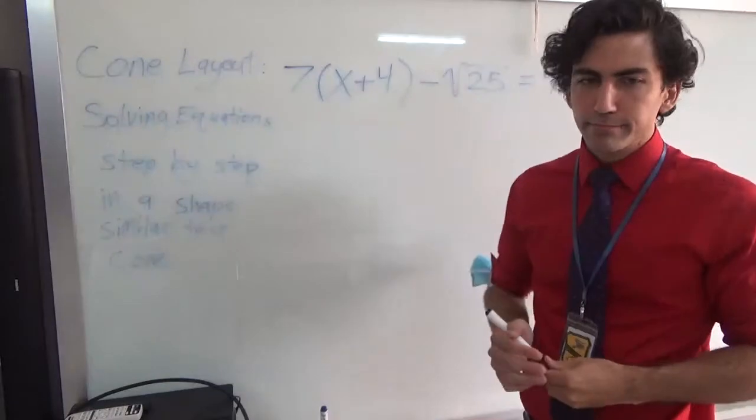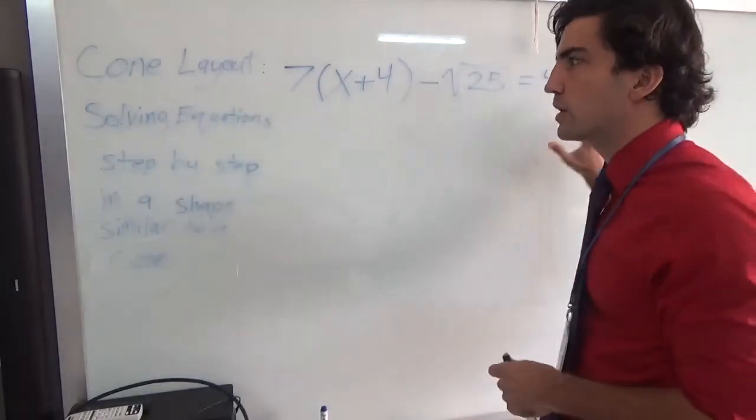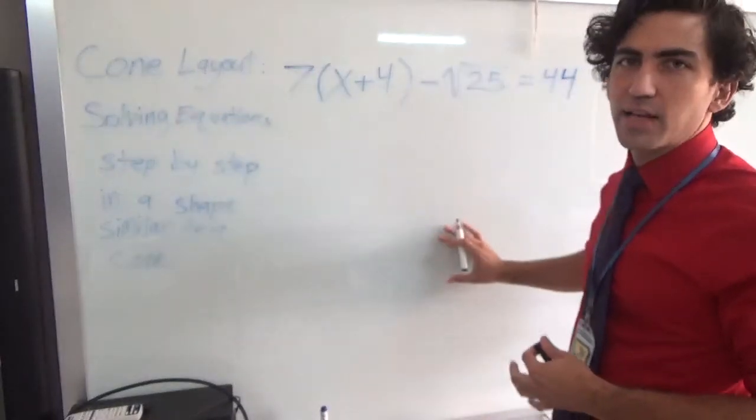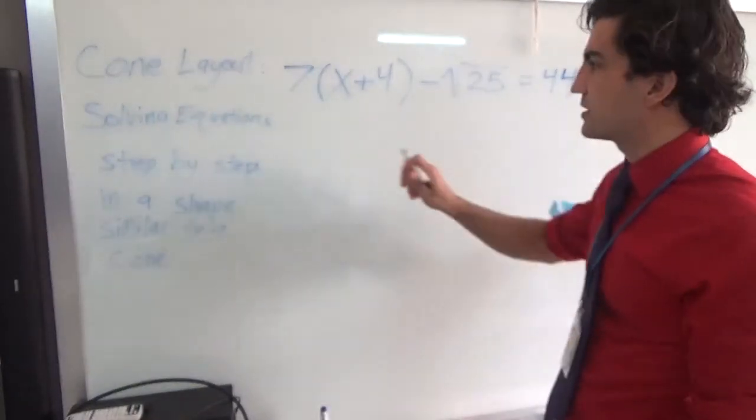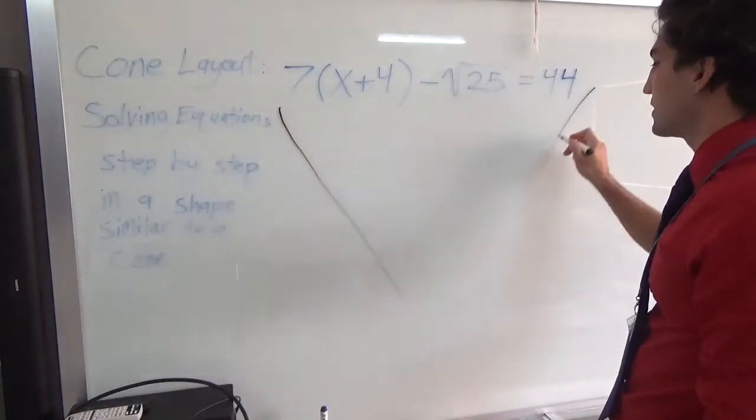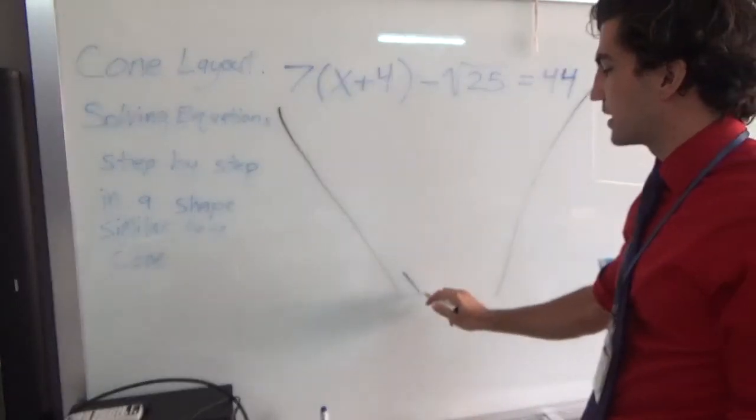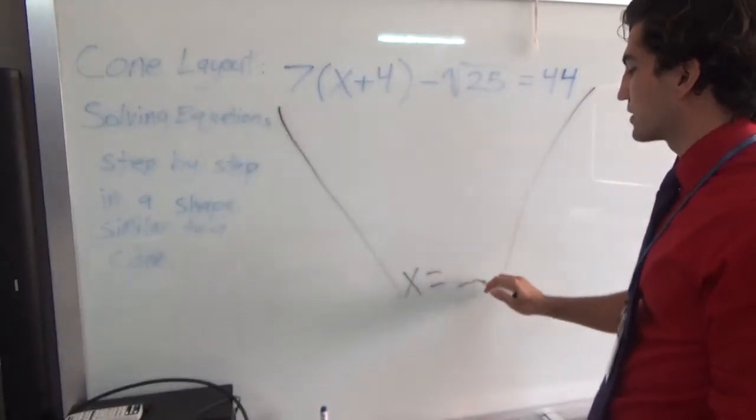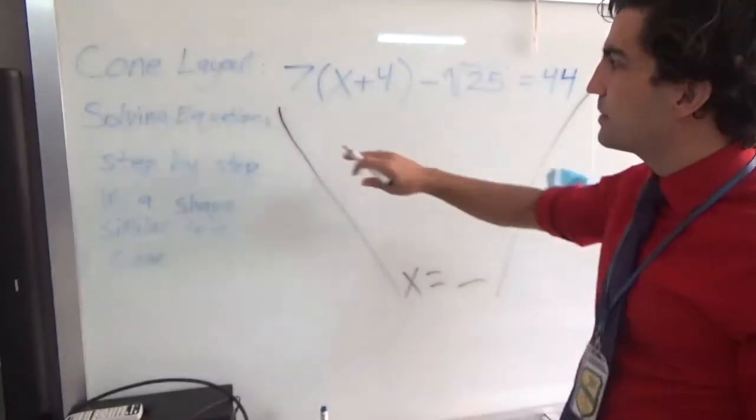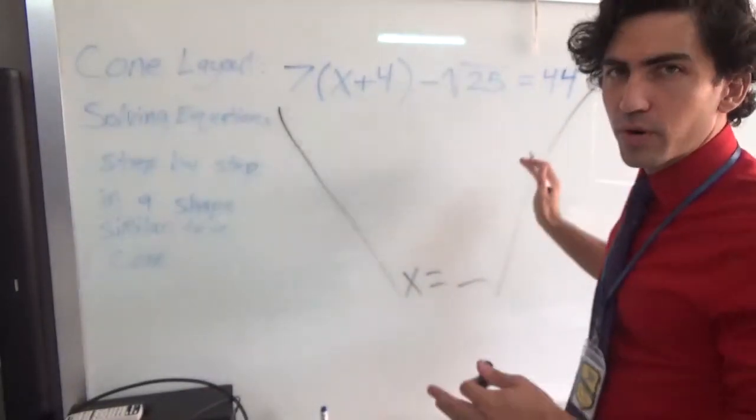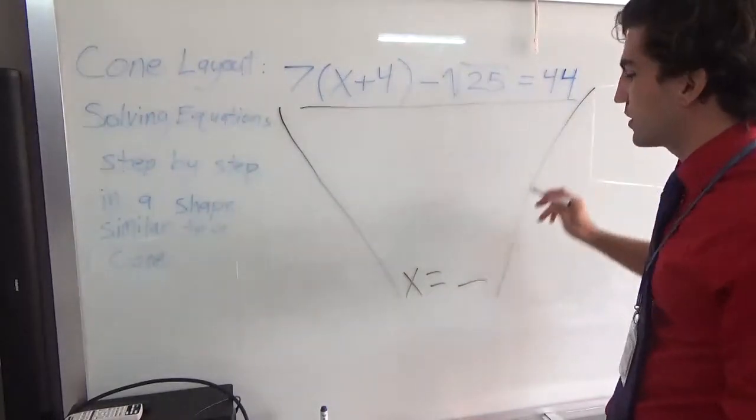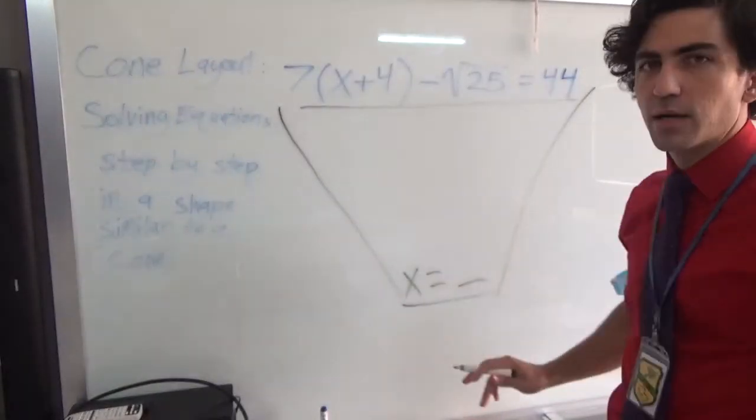The first thing I want to explain is that this cone layout is just a general way to say that as we solve this equation step by step, it's going to start out really wide like this, but our answer is going to come down to kind of a point that's going to say x equals a number. This is just generally, sometimes it'll get a little bit bigger before it gets smaller, but we're trying to go from this whole big equation all the way down to just x equals a number.